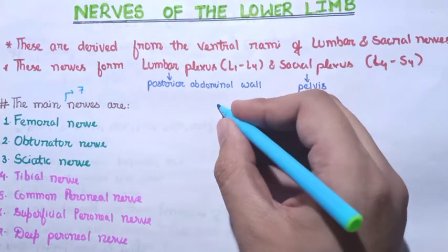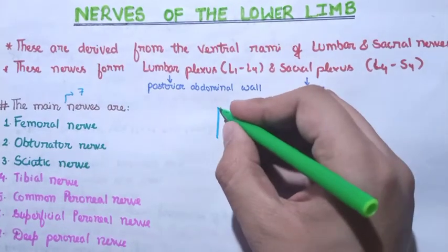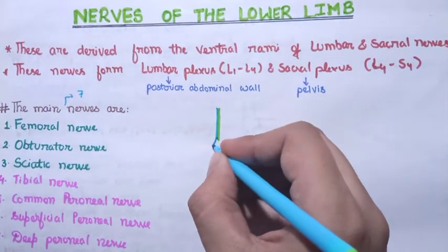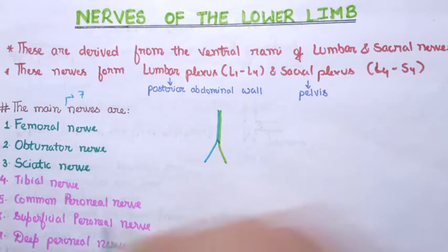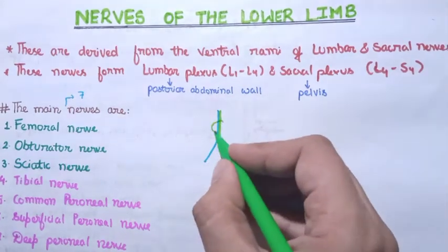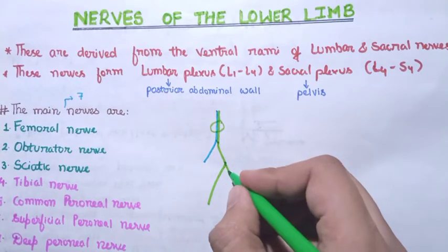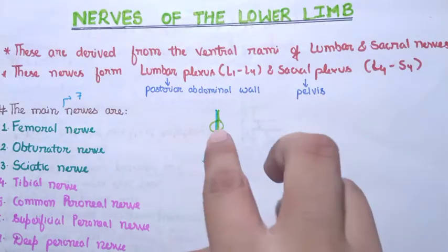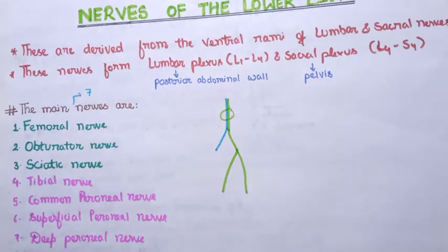The sciatic nerve has two components: the blue colored section shown here is the tibial part, and the green colored section is the common peroneal part. When these two parts are combined, they are called the sciatic nerve. In the lower region, this divides into two separate sections — the tibial nerve separates and the common peroneal nerve separates, each with their individual names. The common peroneal nerve again divides into two: the superficial peroneal and the deep peroneal nerve. So the main nerves are the femoral nerve, obturator nerve, sciatic nerve, and the sciatic nerve's components: tibial nerve and the common peroneal nerve.